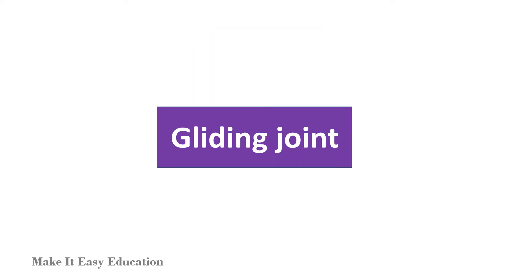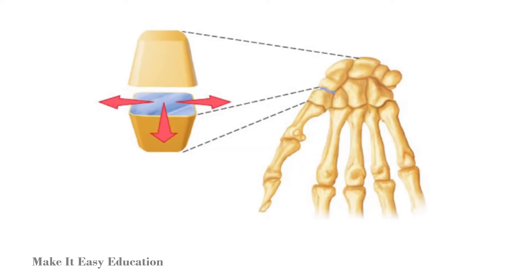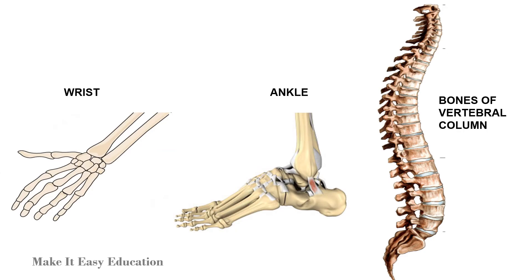Gliding joint: A gliding joint allows the bones to glide against each other. Gliding joints are found in the bones of the wrist and ankle, and between the bones of the vertebral column.